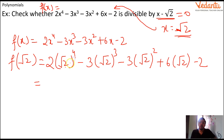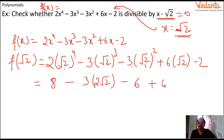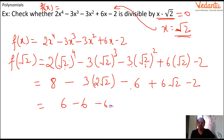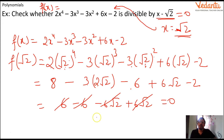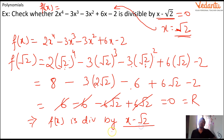Now (√2)⁴ = 4, so 2×4 = 8. Then (√2)³ = 2√2, so -3×2√2 = -6√2. Then (√2)² = 2, so -3×2 = -6. And we have +6√2 and -2. Combining: 8 - 2 = 6, and -6 + 6 cancels to 0 for the constant terms. Then -6√2 + 6√2 = 0 for the root terms. So all terms cancel and the final value is 0. Since remainder is 0, f(x) is divisible by x - √2.